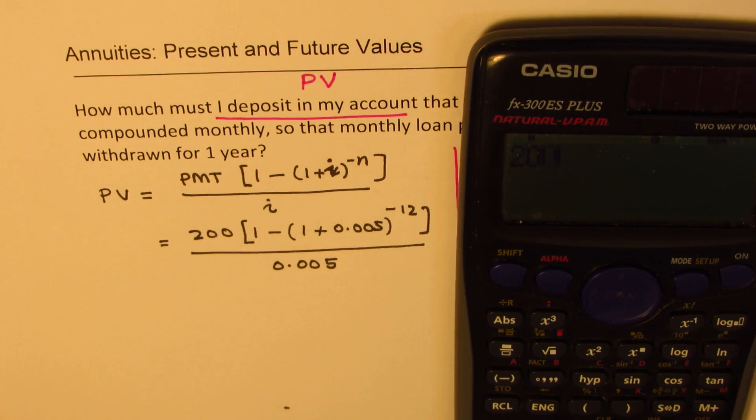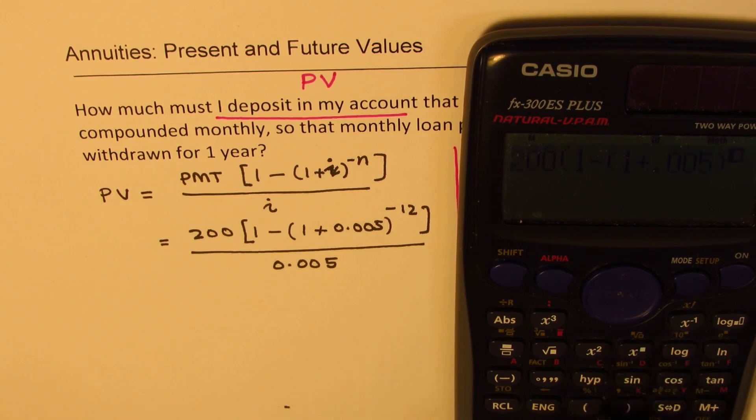So we have 200, 1 bracket, 1 minus another bracket, 1 plus 0.005 bracket close, power negative 12. We have to close the bracket, divide by 0.005, answer.